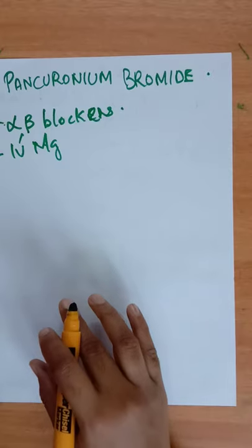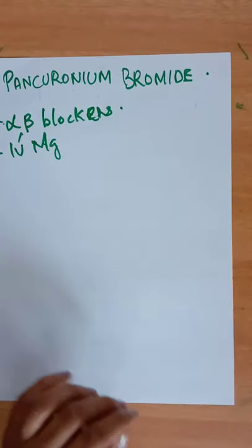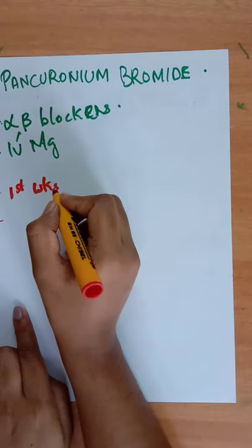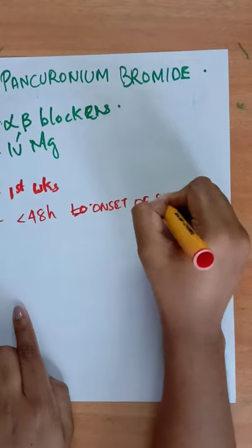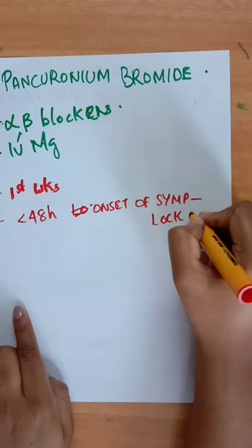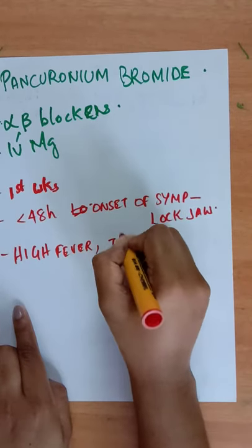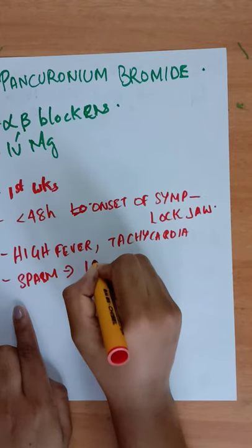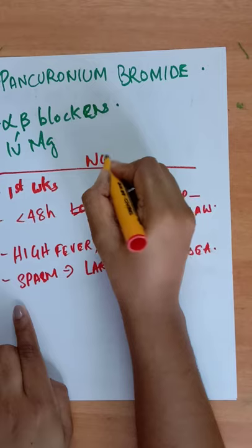About the prognosis: it has high mortality. The outcome depends on the incubation period, the site of injury, rate of progression of the illness, and the presence of autonomic instability. Prognosis is worse when the onset of symptoms occurs within the first week of life, interval between lockjaw and onset of symptoms is less than 48 hours, and there is high fever, tachycardia, and spasms, especially of the larynx causing apnea.